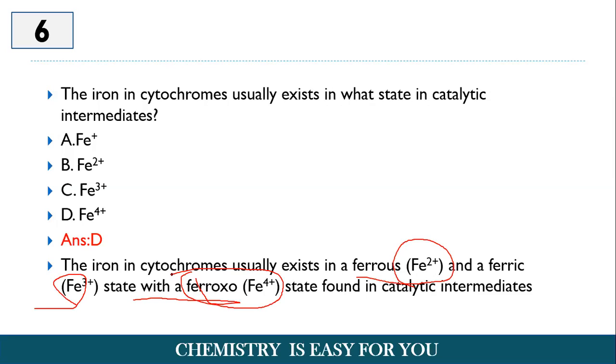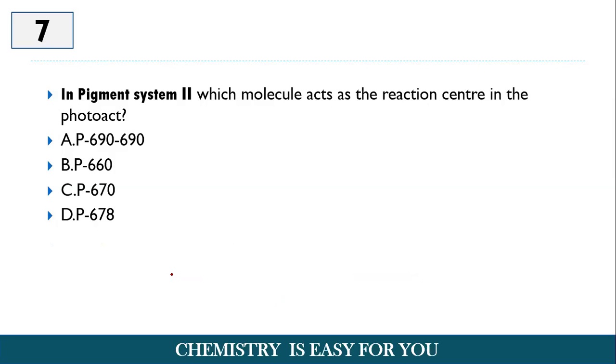Please keep this one in mind. Now, the next question, in pigment system 2, which molecule acts as the reaction center in the photoact? So here, chlorophyll B650, option A, acts as an antenna. This is the problem. This is a question from photosynthesis. So chlorophyll B650 is the one that acts as an antenna. And therefore, option A is the correct answer.